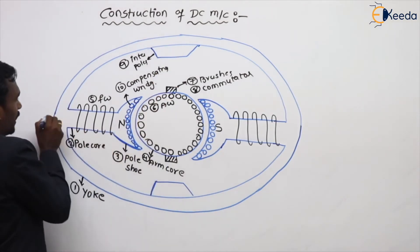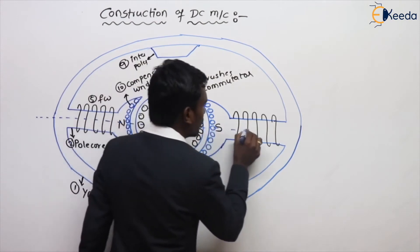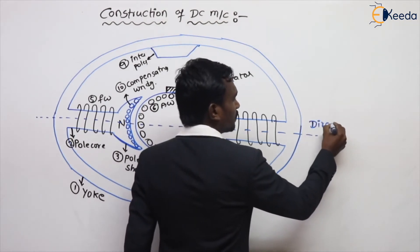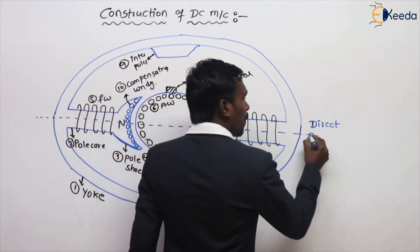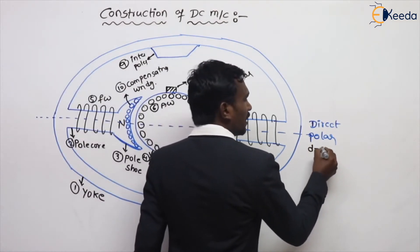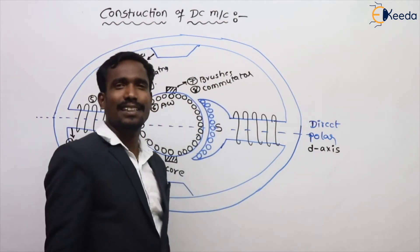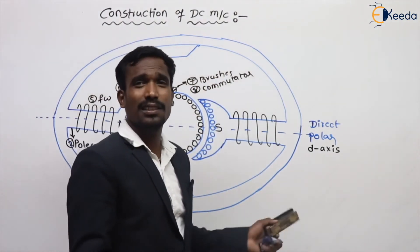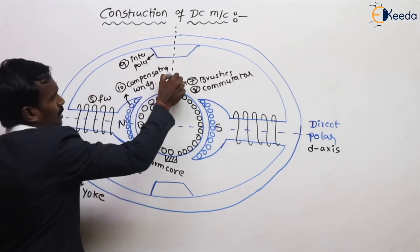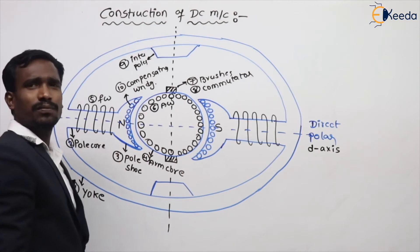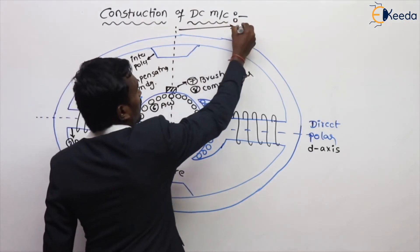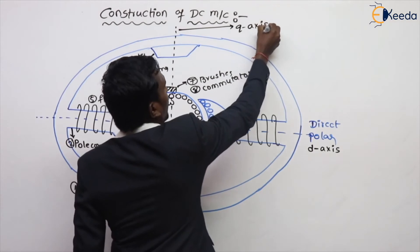If you draw an axis like this, it is called the direct axis, also called the polar axis. In short, the sweet name of this axis is D-axis. If you draw an axis which is in quadrature with the D-axis — 90 degrees electrical to the D-axis — it is called the quadrature axis, or Q-axis.